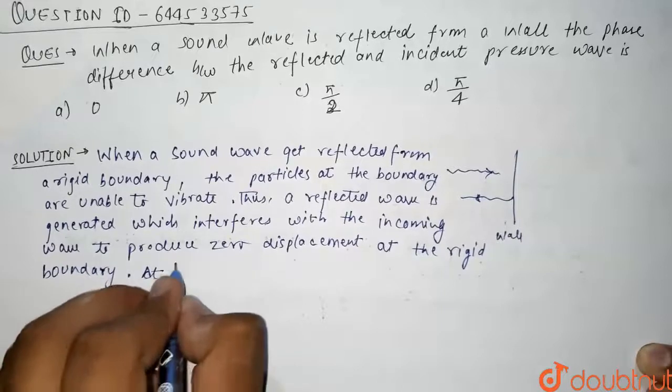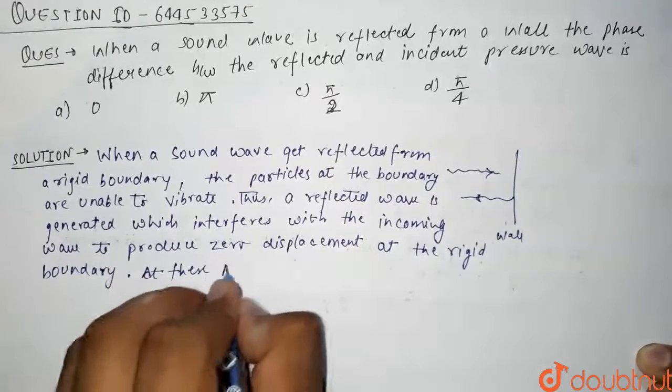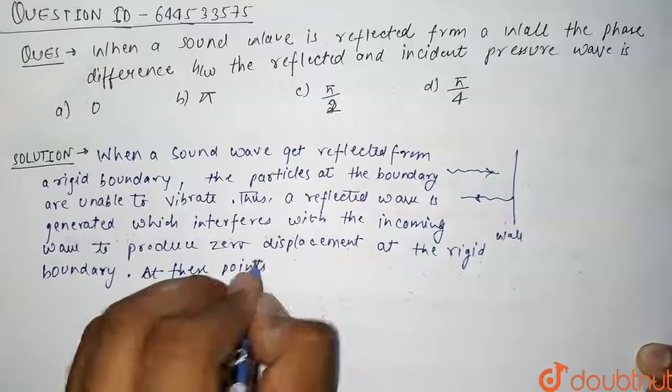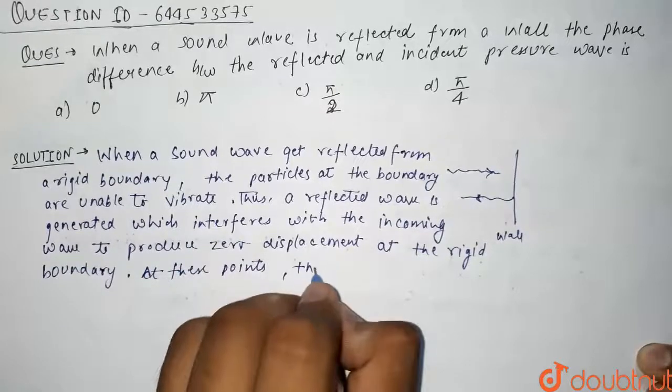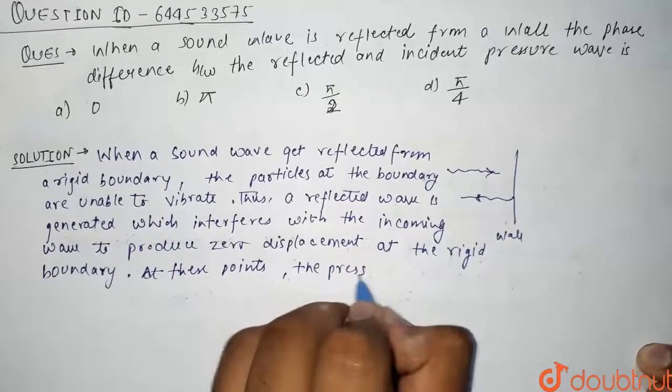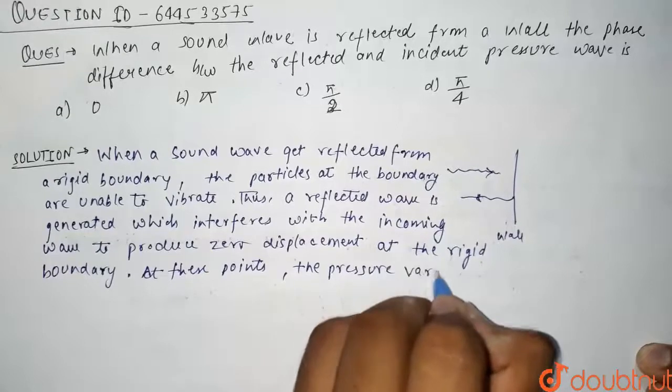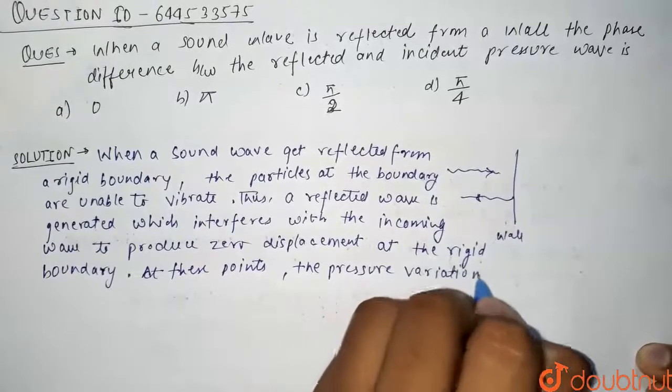At these points where there is zero displacement, the pressure variation is maximum